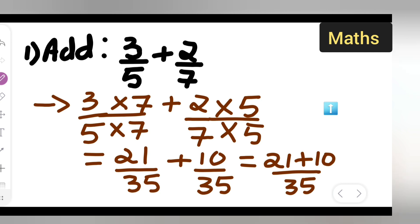Take this 35 to be common, so 21 plus 10 and 35 is common. 21 plus 10 will give you 31, so 31 upon 35. What will be your answer? 31 upon 35.